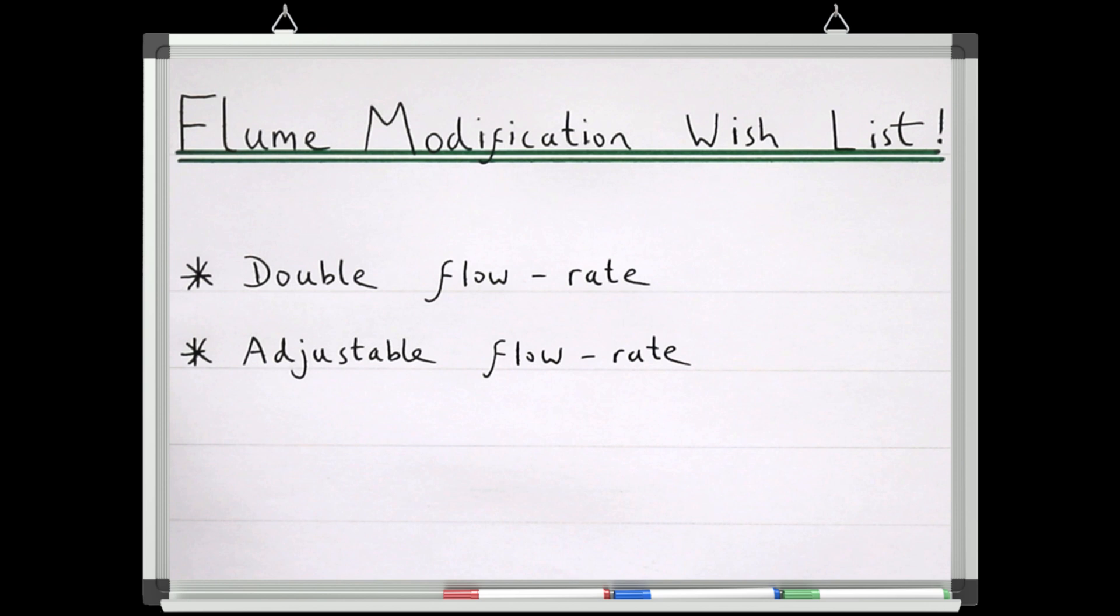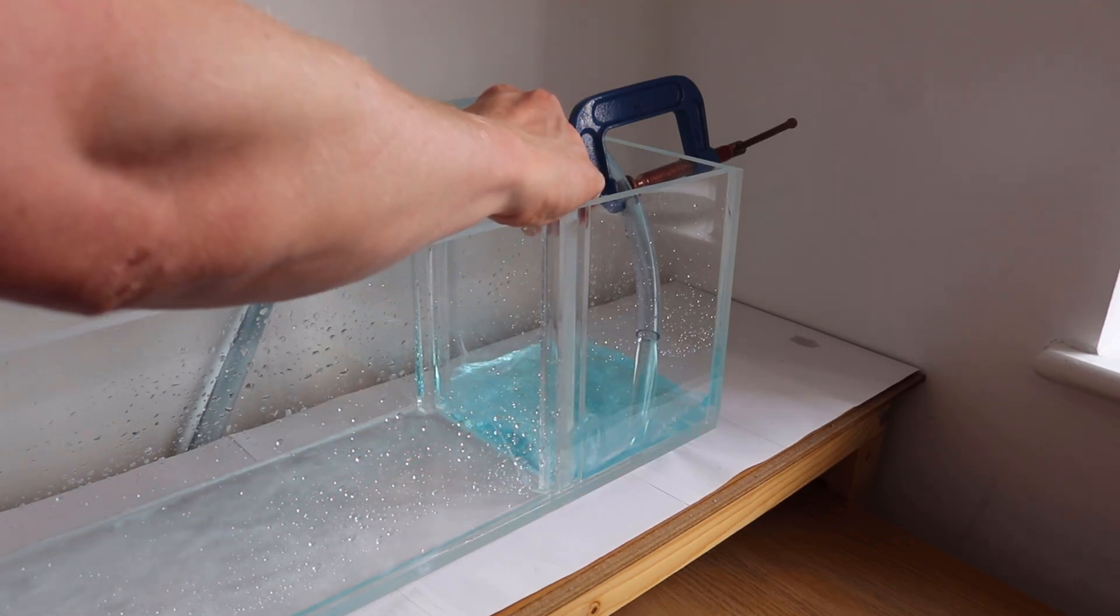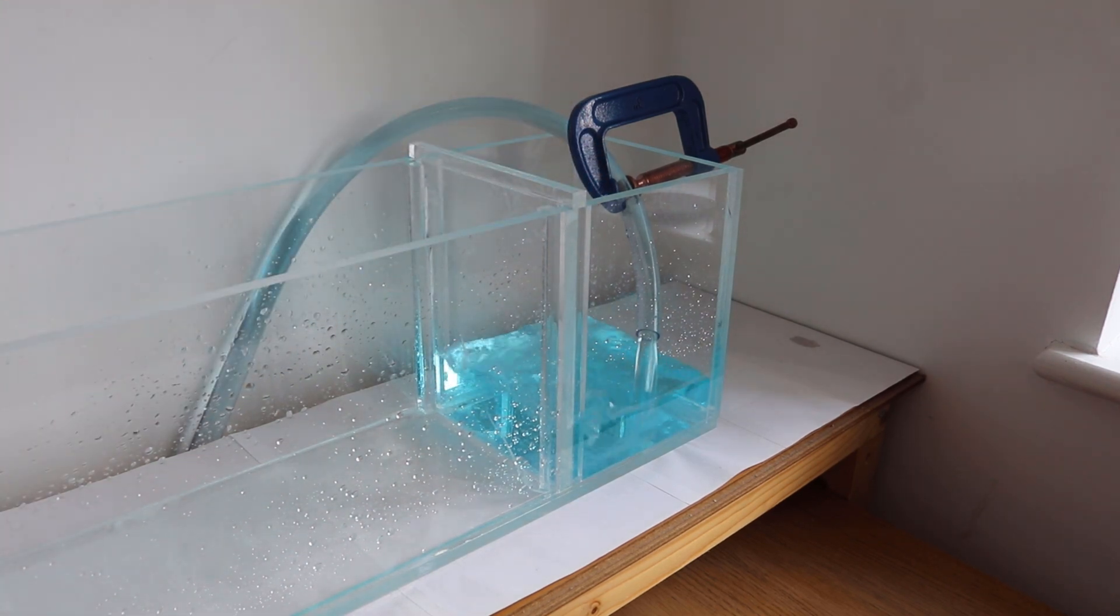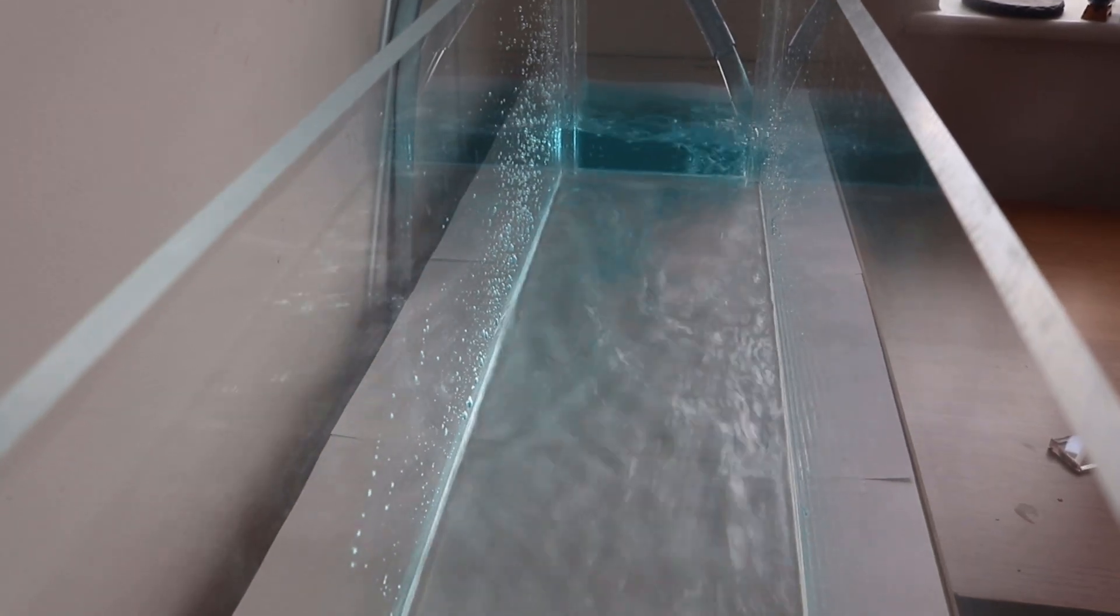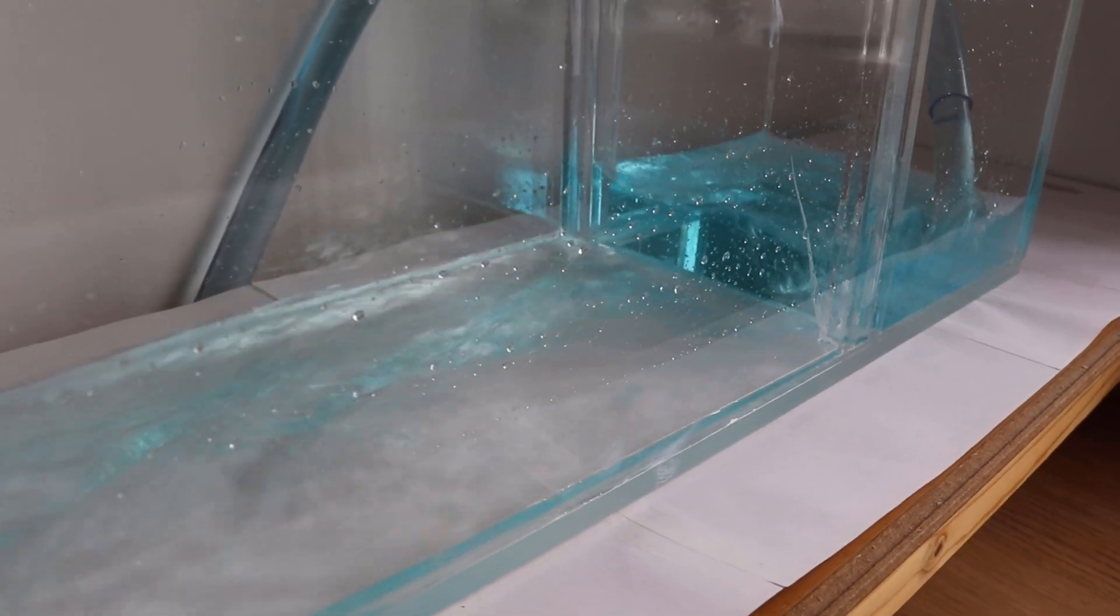Next I want to improve the flume's inlet to give more stable flow. I've already installed this sluice gate to create a primitive stilling pool, but it's currently not really doing a very good job. So this needs to be completely redesigned if we want to get more stable flow going down the flume.